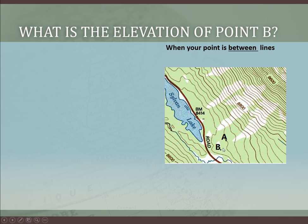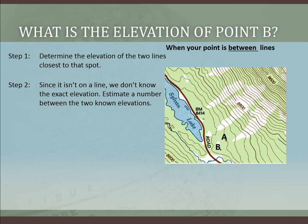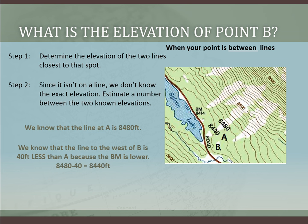What about if the point is not on a contour line — if it's between lines, like point B? We're going to determine the elevation of the two lines closest to this spot, and then estimate the elevation. We know, because we just found out, that this line here is 8,480 feet. We know that the line to the west is going to be lower, because we're going down the hill toward 8,414. So the contour interval is 40 — this one is 8,480 minus 40, that's 8,440.